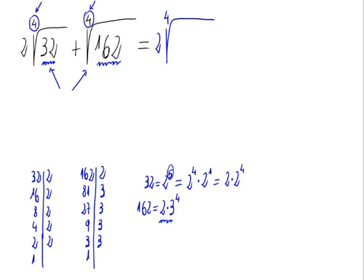Everything would be equal to 2 times the 4th root of 2 times 2 to the 4th, plus the 4th root of 162, that is 2 times 3 to the 4th.